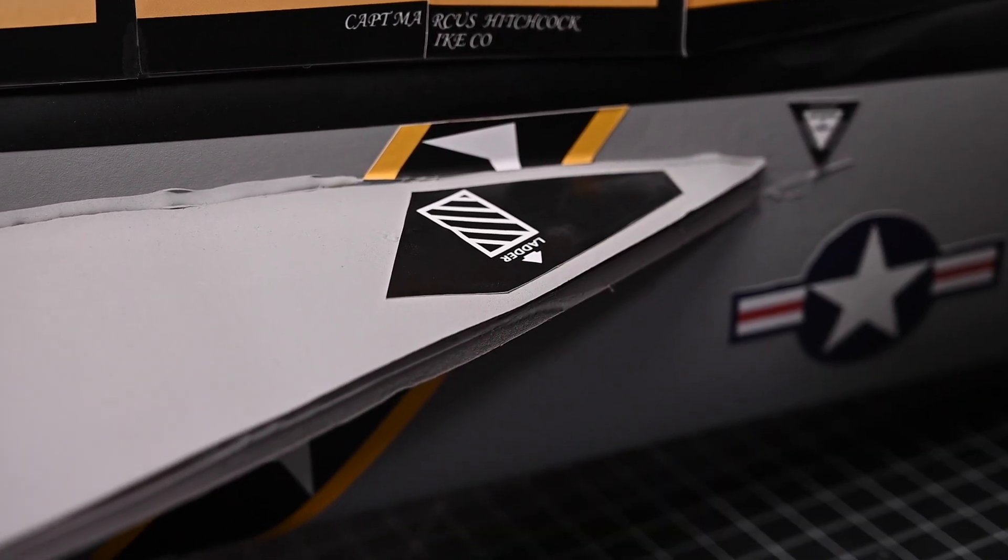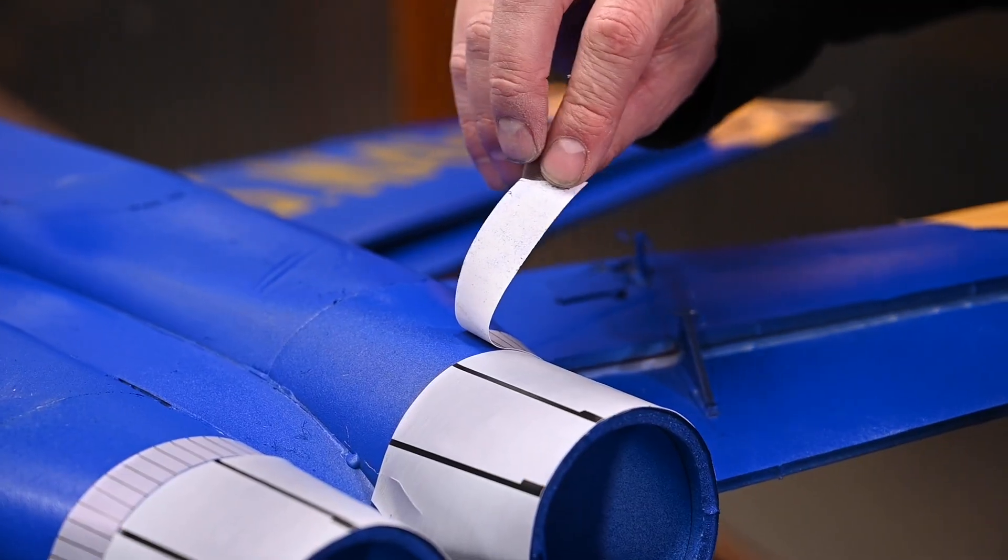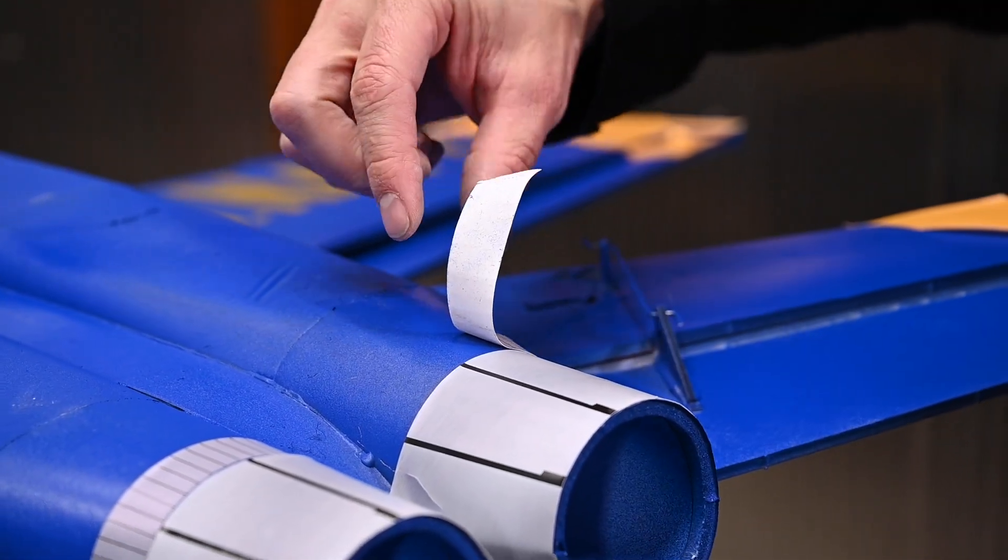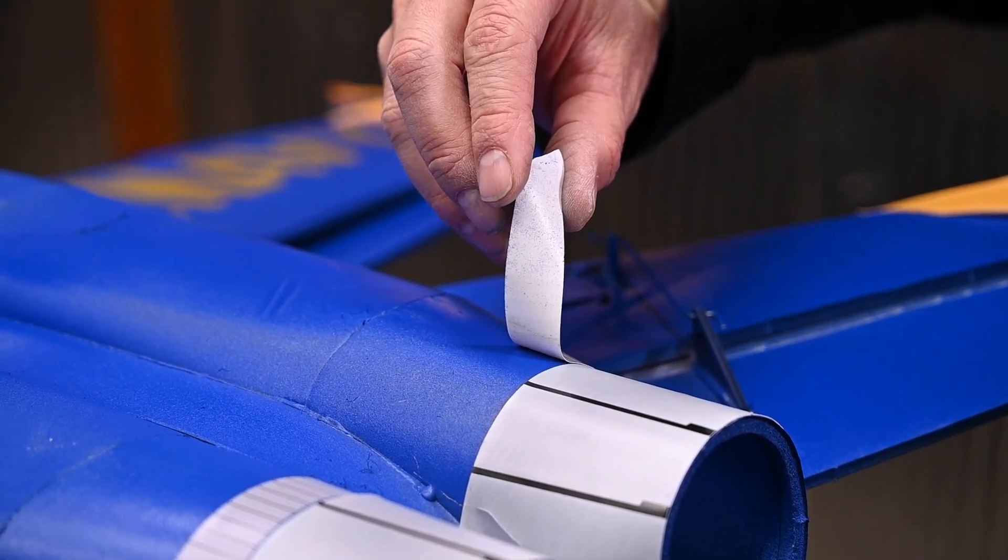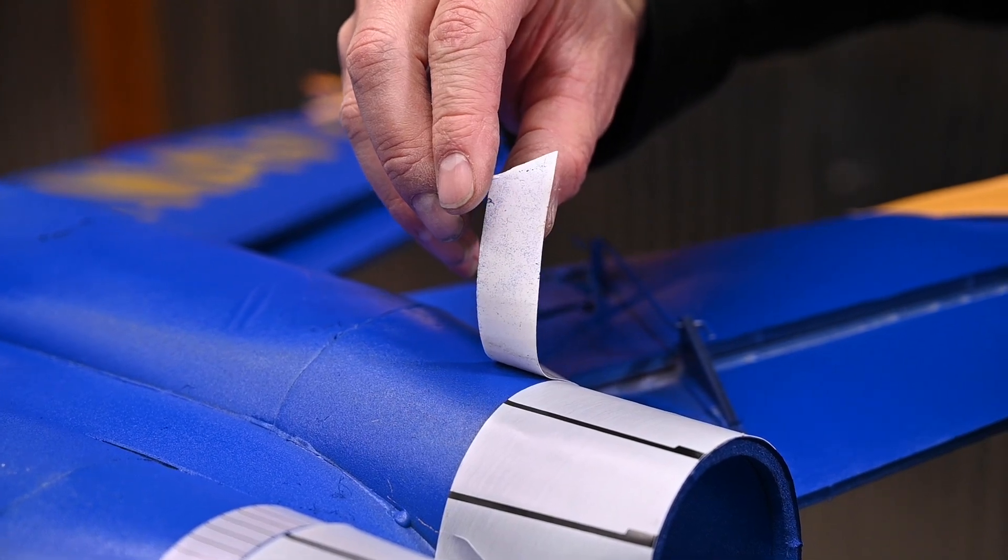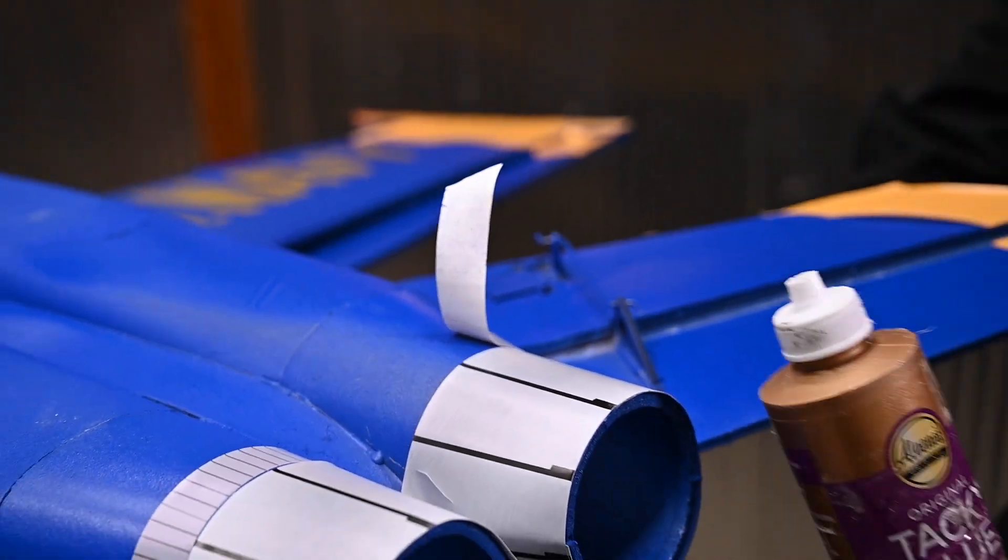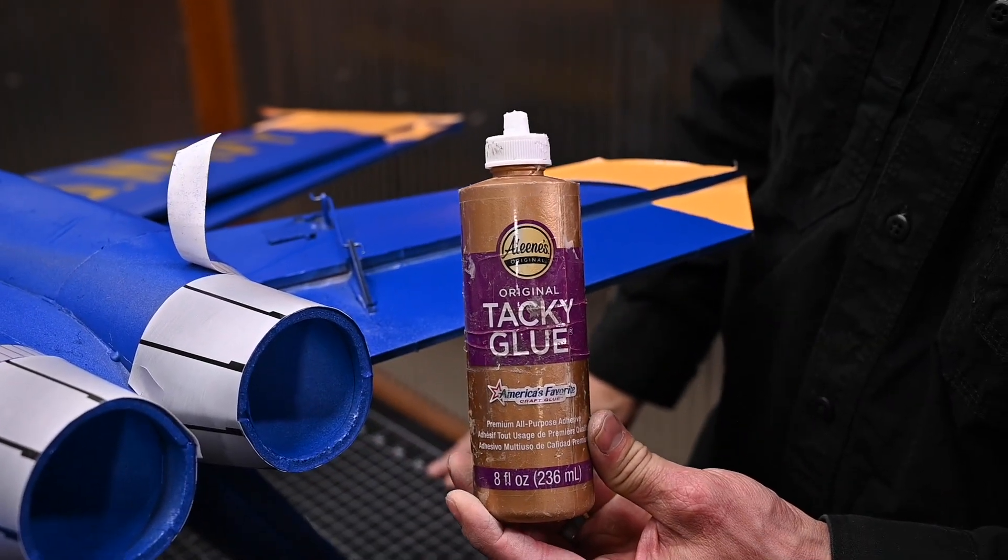Now let's take a look at another method. So if you take a look at my exhaust decal, you'll see that I didn't clean this at all. Look at all the blue dust. This is never going to stick even if I apply heat to it. So what I'm going to do is I'm going to apply some Alene's Tacky Glue to the decal.